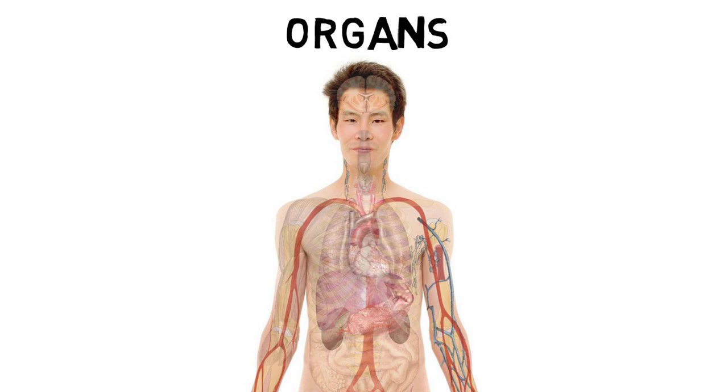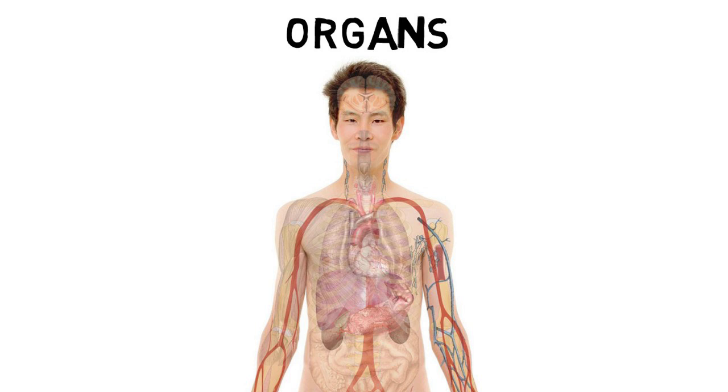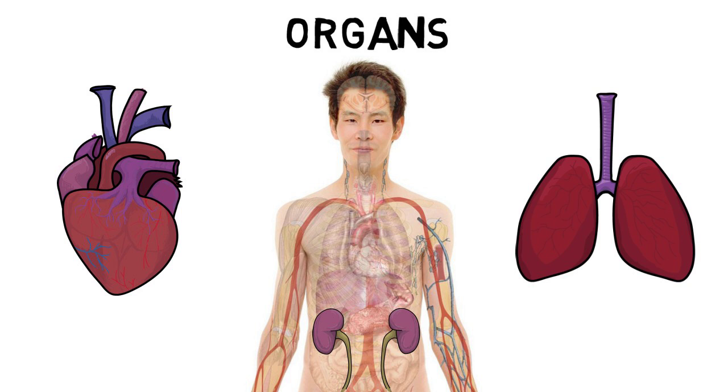The heart beats to circulate blood throughout the body, the lungs expand to fill its chamber with air, and a kidney filters waste products to keep the blood clean. Each organ performs a specialized function. The heart is unable to do what the kidney does, and a kidney is unable to do what the lung does.